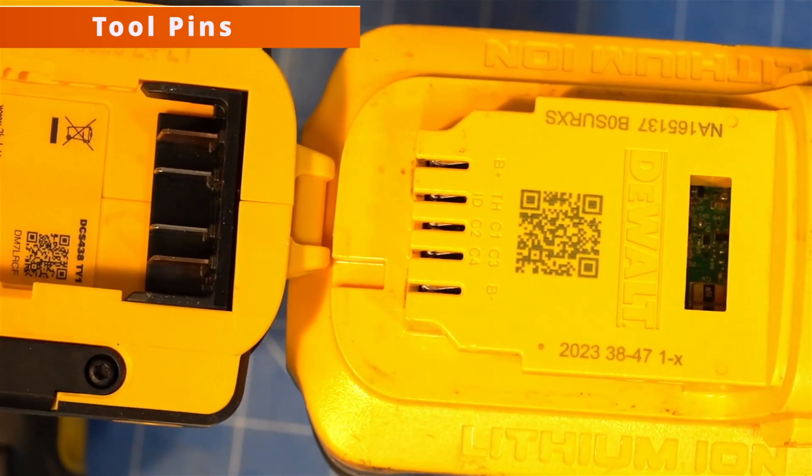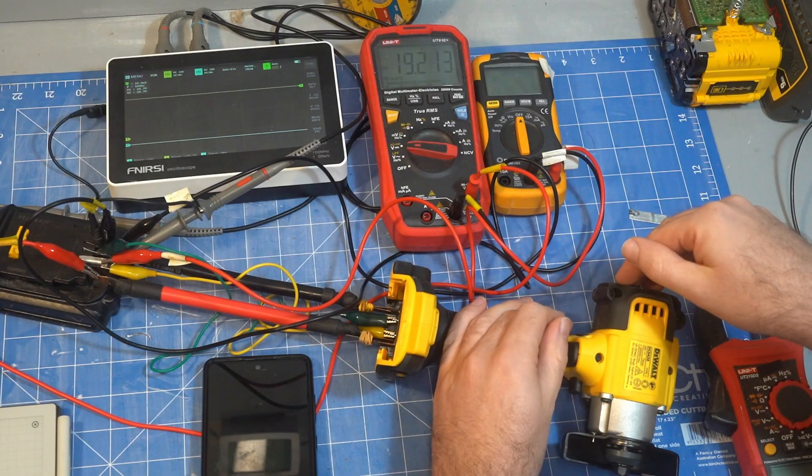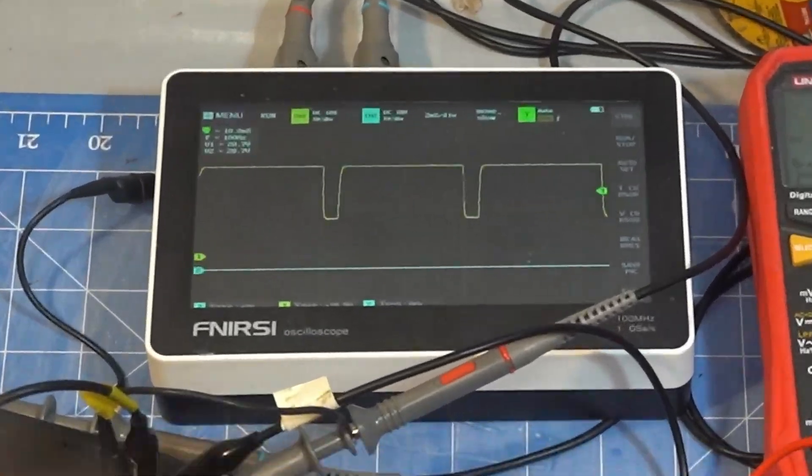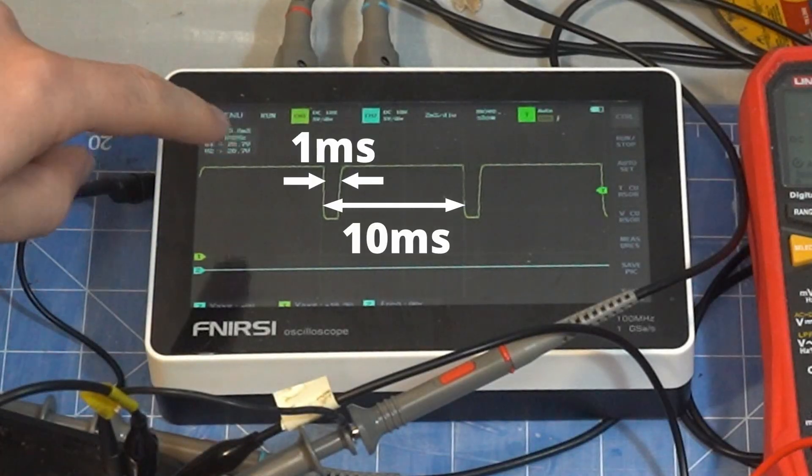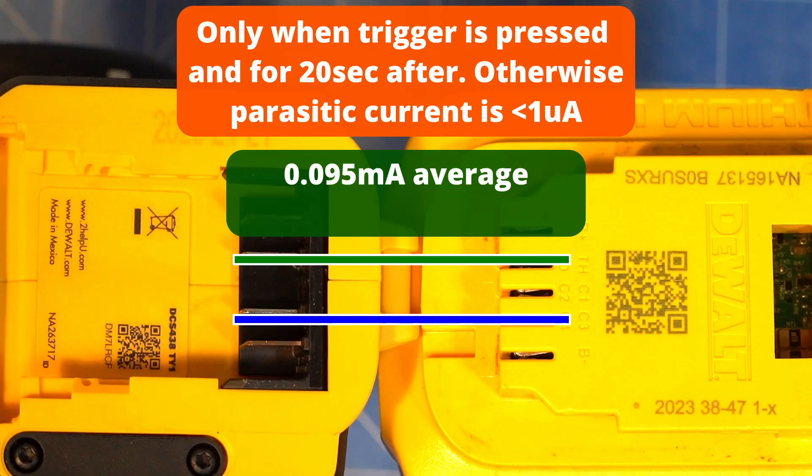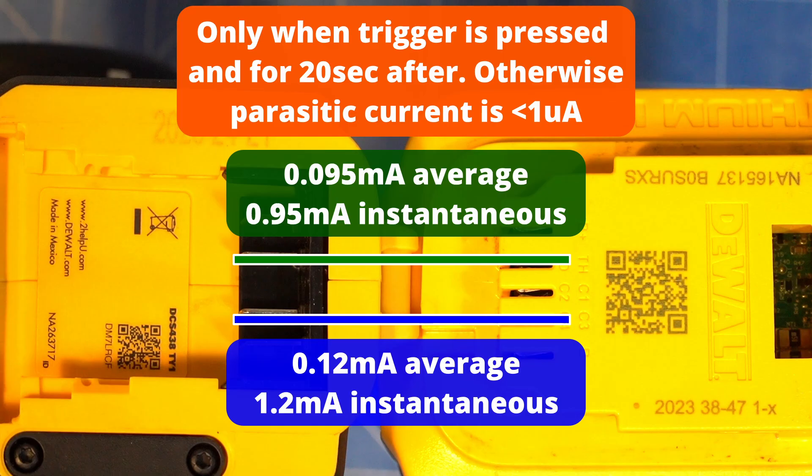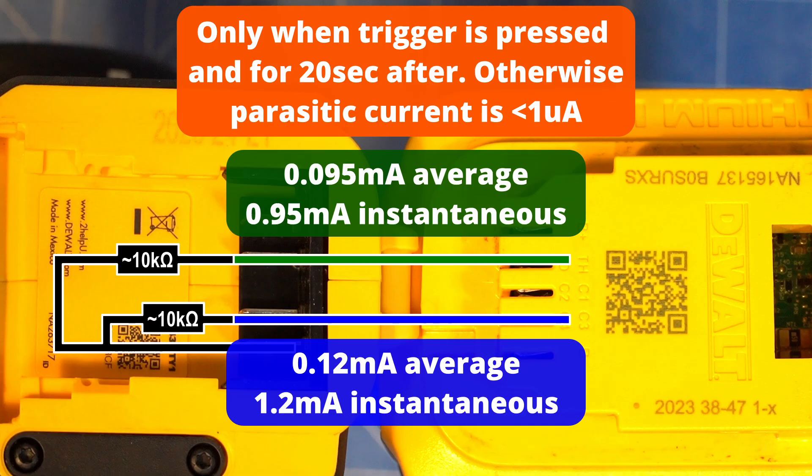The tool only makes use of the thermistor and C3 pin which is the voltage of the third cell. On this tool both pins are only read for one millisecond every 10 milliseconds, but other tools may be different, especially cheaper brush tools without a microcontroller. The tool draws 95 microamps from the thermistor pin and 120 microamps from the C3 pin. As it's on a 10% duty cycle it's actually drawing 0.95 and 1.2 milliamps from which we can deduce that both have about 10kohm input impedance.